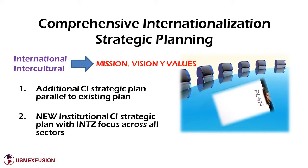Comprehensive internationalization strategic planning. For the planning in this area, it is important to include key international and intercultural concepts in the mission, vision, and values of the institution. There are two types of comprehensive internationalization strategic plans. An additional CI institutional strategic plan can be created, which would run parallel to the existing institutional strategic plan. Or, a new institutional strategic plan can be created, which would include CI as an overarching theme through all sectors of the institution.